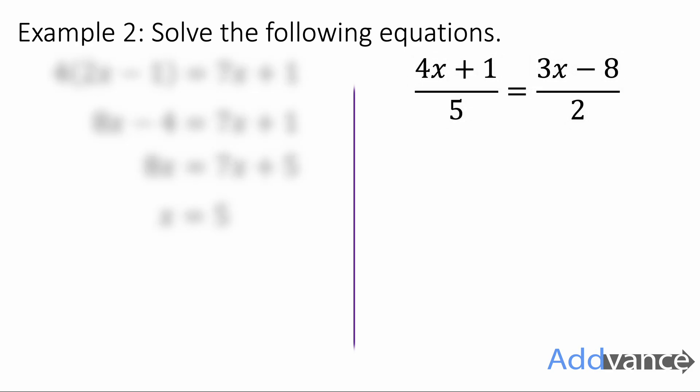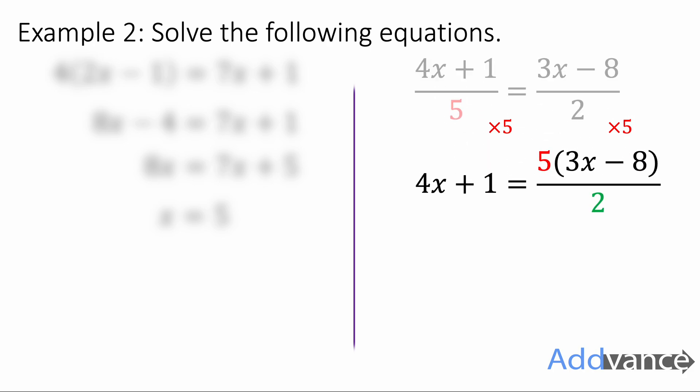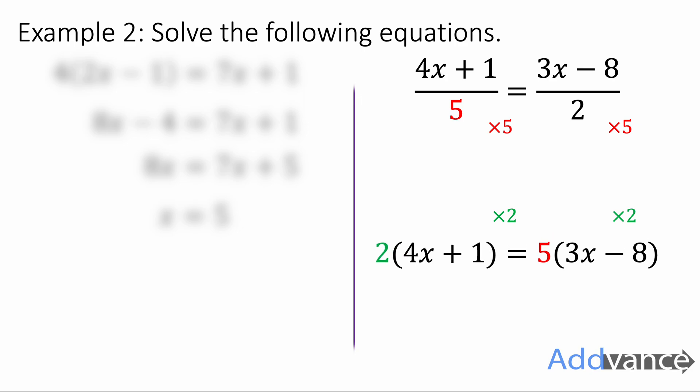Now the next one: we've got (4x plus 1) divided by 5 equals (3x minus 8) over 2. We're going to start by getting rid of the divide by 5 by multiplying both sides by 5. We get 4x plus 1 equals 5 times (3x minus 8) over 2. Notice that we only multiply the top of the fraction by 5 and not the bottom. Then we get rid of the divide by 2 by multiplying by 2.